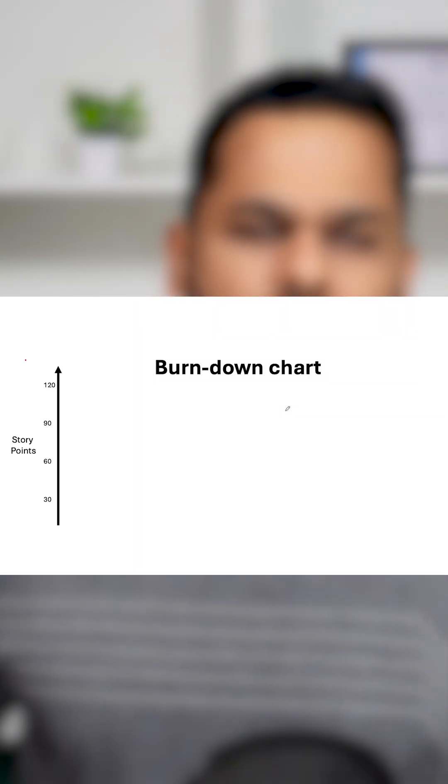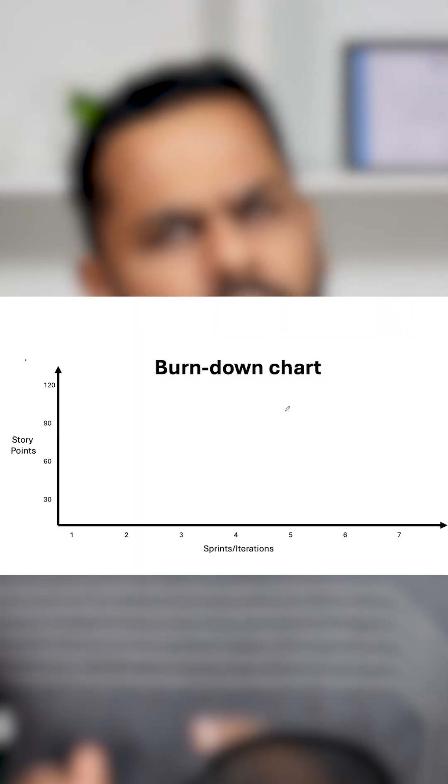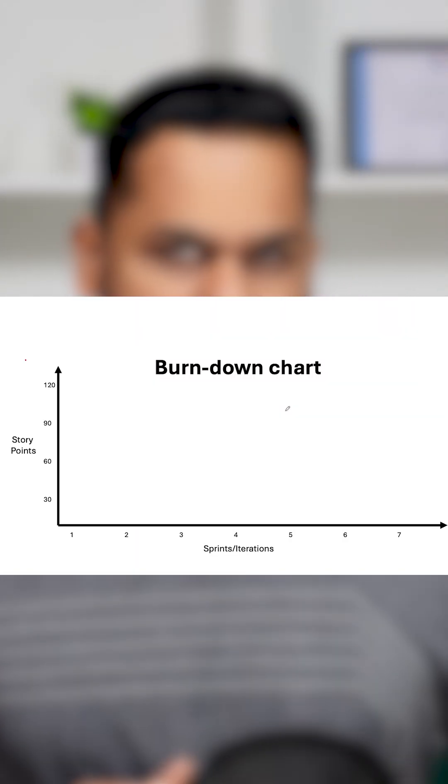Whenever you want to create a burndown chart, you will start with story points on the y-axis and sprints or iterations on the x-axis. We will try to keep a track on iteration by iteration how many story points we are able to complete.